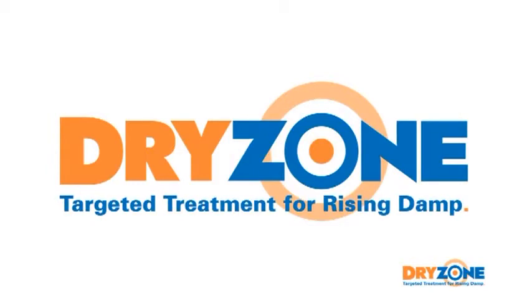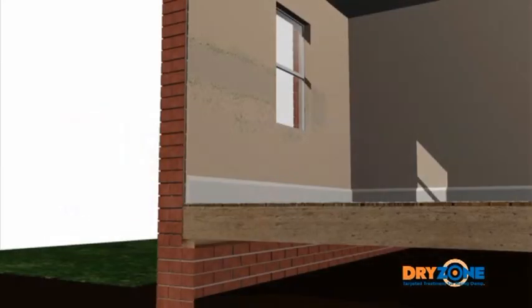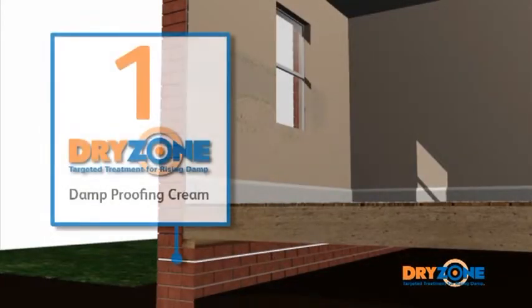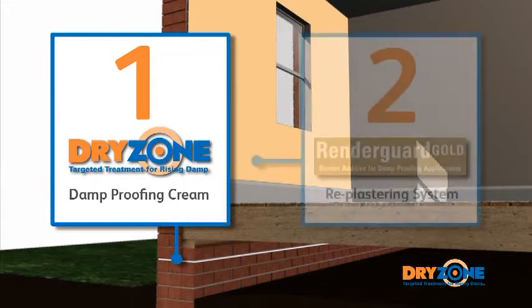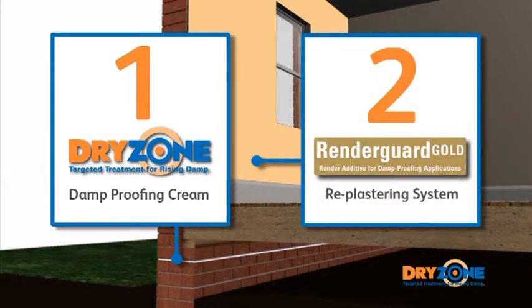The Dryzone system comprises two essential elements. The patented Dryzone damp-proofing cream, which forms a barrier to moisture rising from the ground, and a salt-resistant re-plastering system that isolates salt contamination that is built up within the wall structure, preventing damage to paintwork and decor.